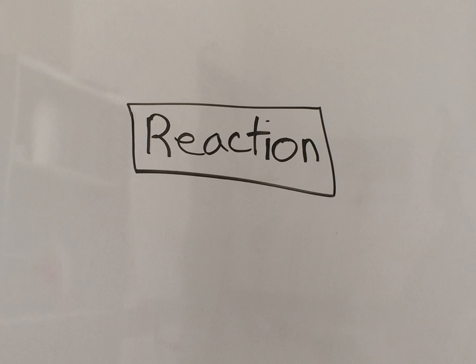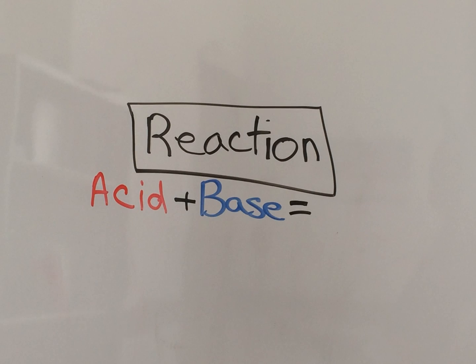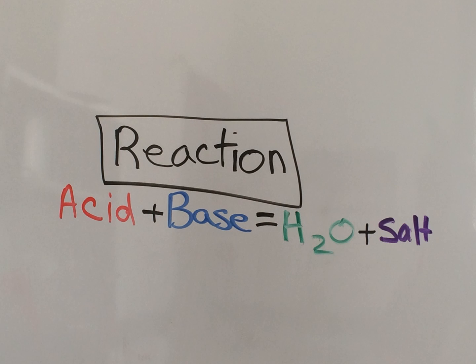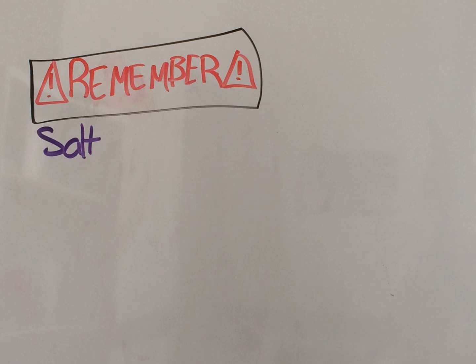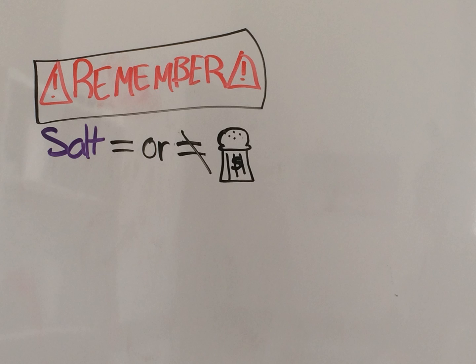When an acid and a base react, they form two things: water and a salt. Remember that when we say salt in chemistry, we're not talking about table salt necessarily, we're talking about any ionic compound, which could include table salt.